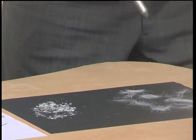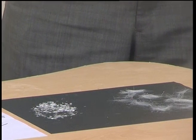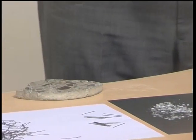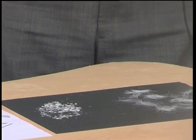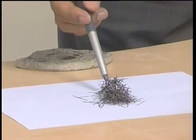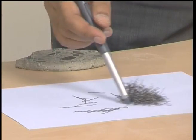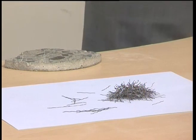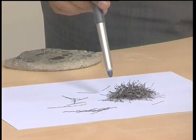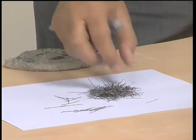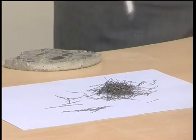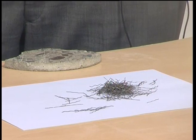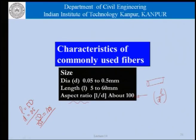The aspect ratios can be calculated depending on the length and diameter of the fibers. This illustration shows how fibers tend to form and group as a ball when mixed with concrete. If we do not take special measures to break this ball and ensure individual fibers are dispersed within the concrete matrix, the effectiveness of fibers is very small.